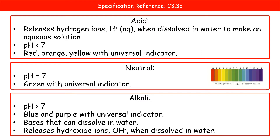Alkalis have a pH greater than 7. They go blue or purple with universal indicator solution, and what we have here is that they release hydroxide ions OH⁻ when dissolved in water. For acids, the additional GCSE bit is that they release hydrogen ions when dissolved in water.